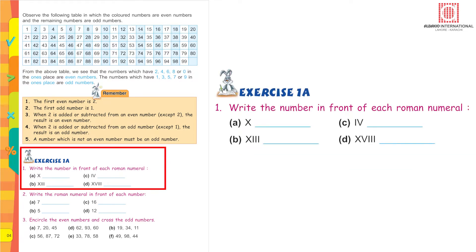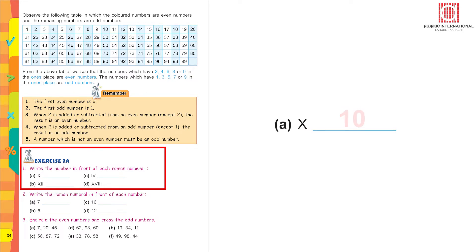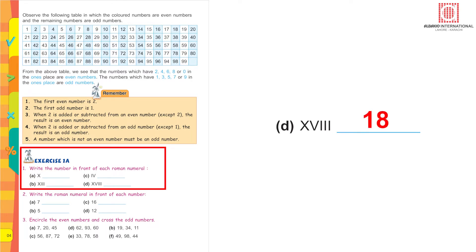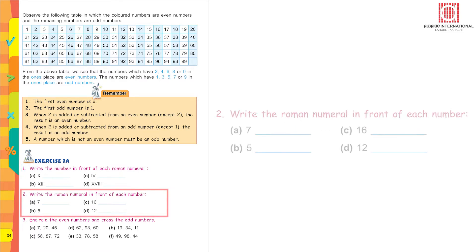Exercise 1A: write the number in front of each Roman numeral. X stands for 10. IV stands for 4. XIII stands for 13. XVIII stands for 18. This is how you are going to do it. Question number 2: write the Roman numeral in front of each number. I am going to do part A; the rest of the parts will be done by you with the help of your teacher, or you can do it yourself.